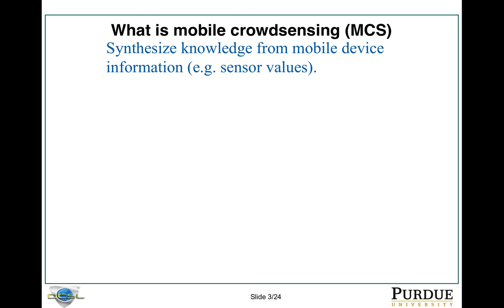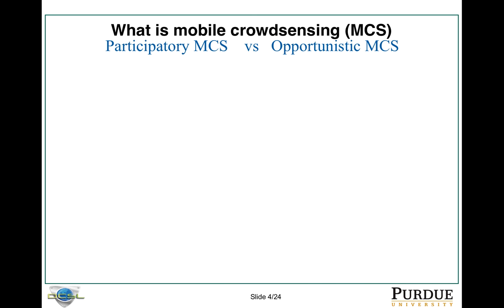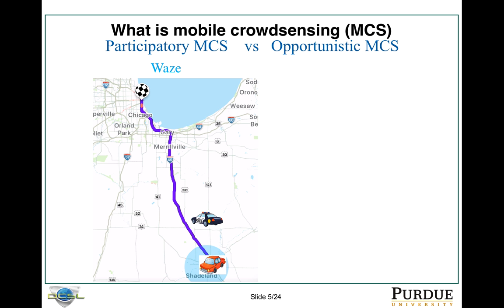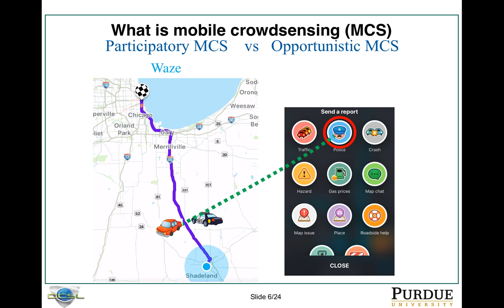So what is mobile crowd-sensing? It's an activity to synthesize knowledge from mobile device information, like your sensor values. In mobile crowd-sensing, there are two types. The first one is participatory mobile crowd-sensing. Like the example here, Waze is a driving help map, like Google Maps. For example, the red car is driving from Purdue to Chicago. On the road, he found a police officer and reports it through Waze. Other drivers who are using Waze and on the same route will see this data information from this red car.